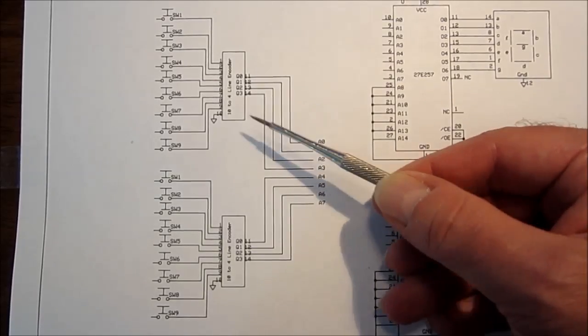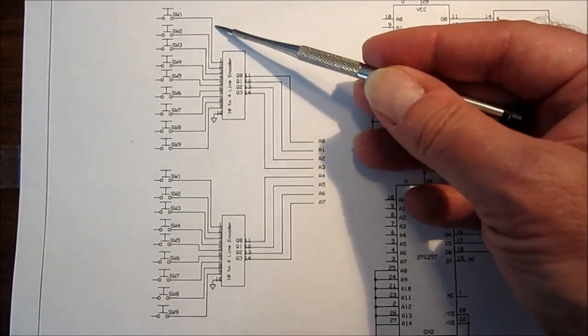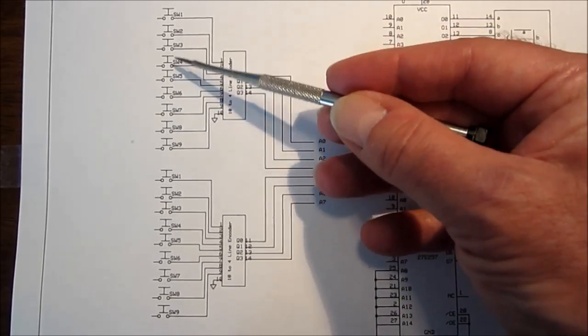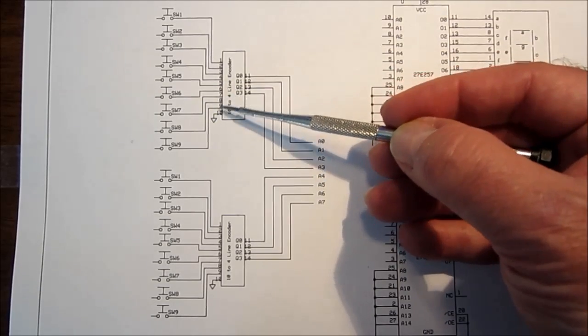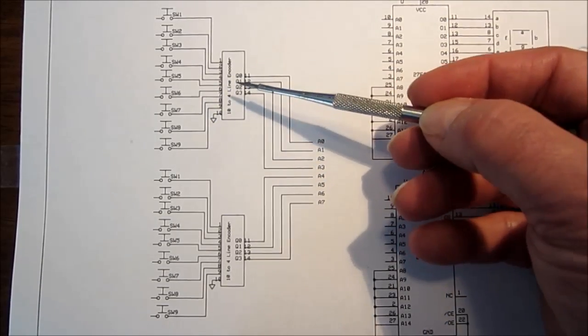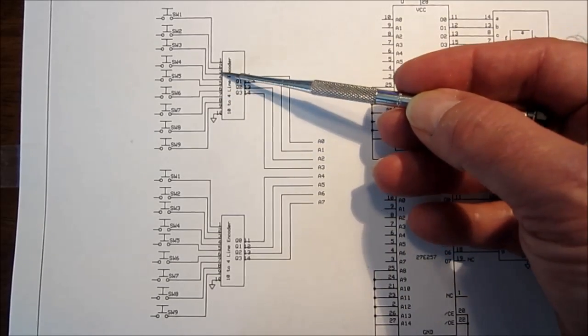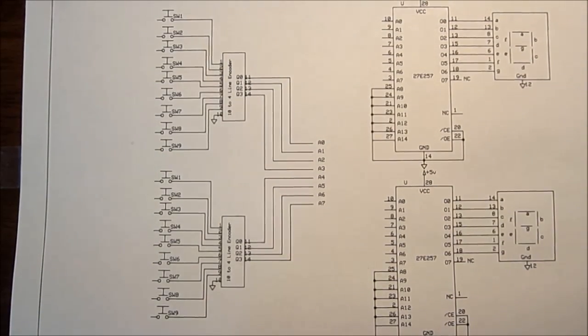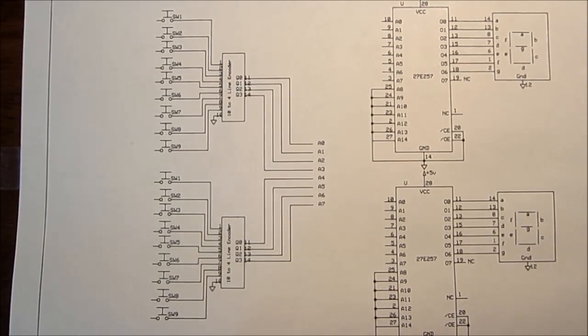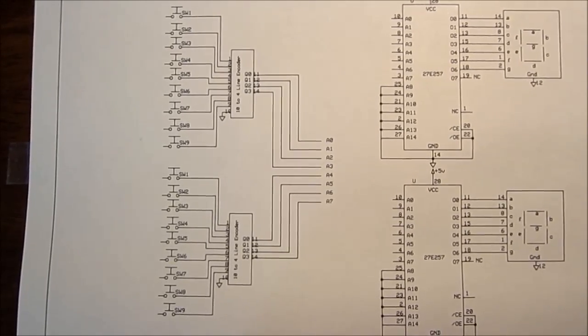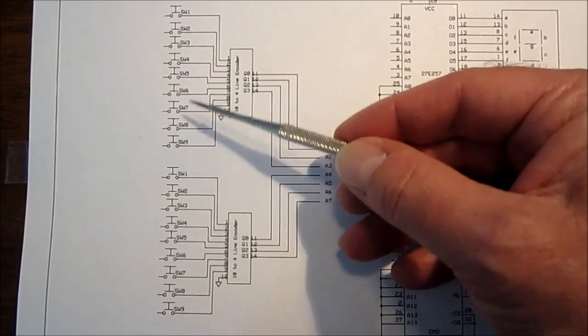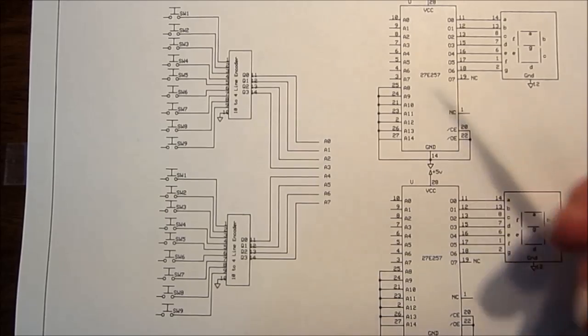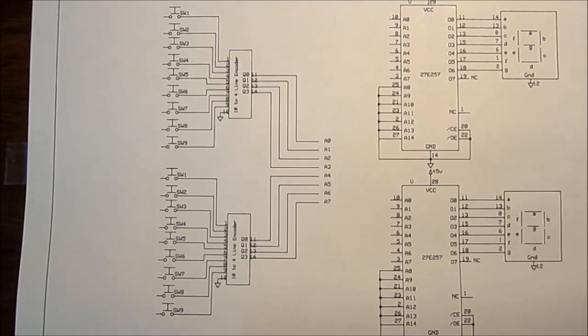Now why do they call this a priority encoder? The reason is that you have all these switches that are going into individual lines. What happens if more than one of these switches is closed? Or one of these signals, more than one signal is active at a time. The reason they call it a priority encoder is that it takes the higher, the more significant signal in, and it uses that to encode the output. So if you were to press a 1 and a 9 it would encode the 9 on this output as BCD or binary coded decimal.